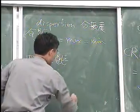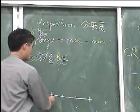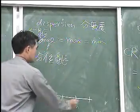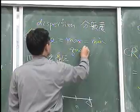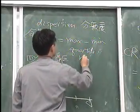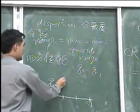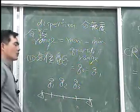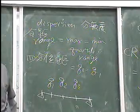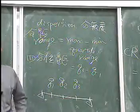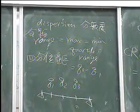An alternative is the quartile range, where you divide the data into four portions. The interquartile range equals Q3 minus Q1. But this still has the same problem — you only use two data points out of all n observations, so it is not quite enough.